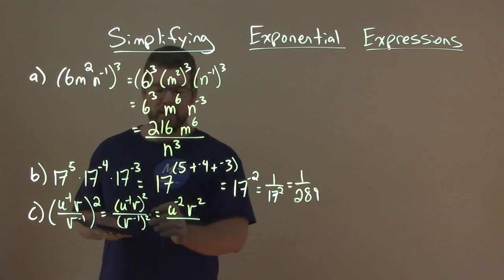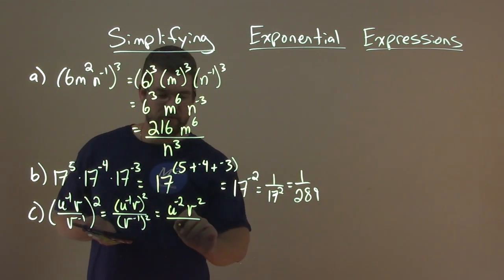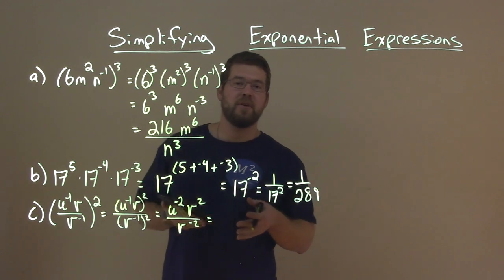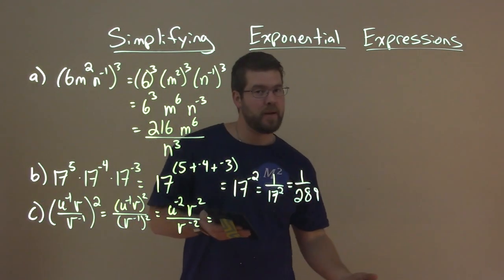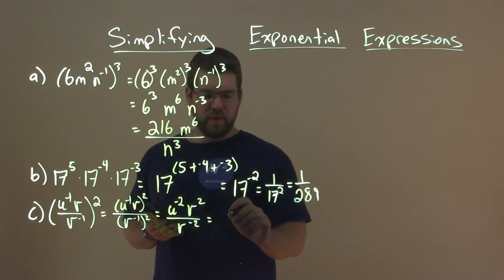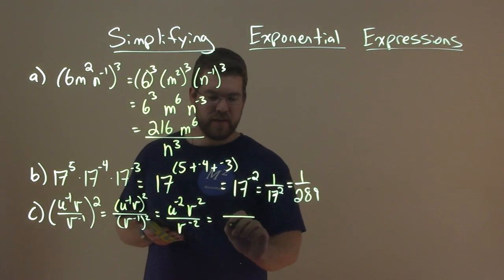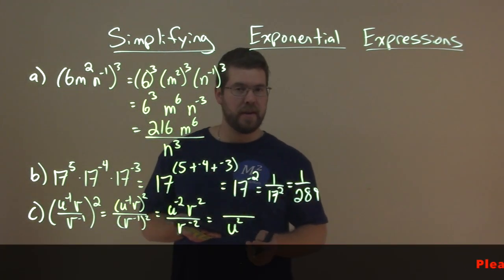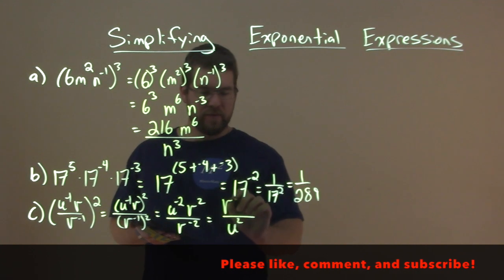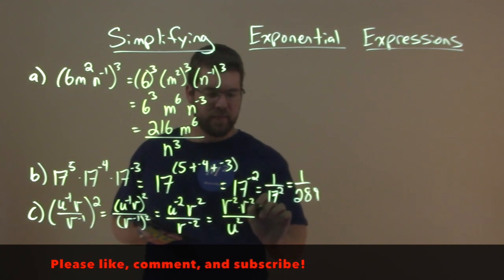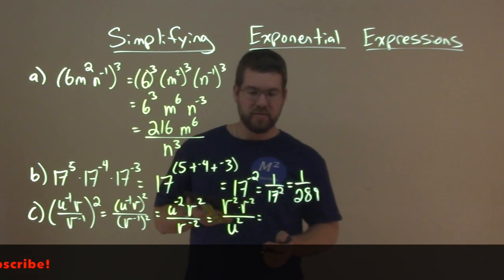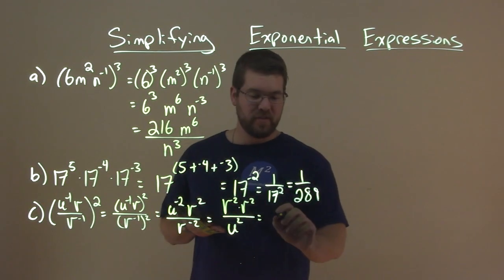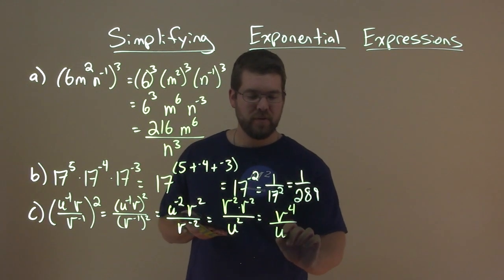All over — denominator, same thing. Negative 1 times 2 is negative 2, so we have v to the negative 2 power. We don't really like negative exponents, so if it's in the numerator, bring it to the denominator and make it positive, and vice versa. So u to the negative 2 goes down to the denominator as positive u squared. V to the negative 2 comes up, so we have v squared times v squared. We add our exponents — 2 plus 2 is 4. So we have v to the positive 4 over u squared. And there's our answer.